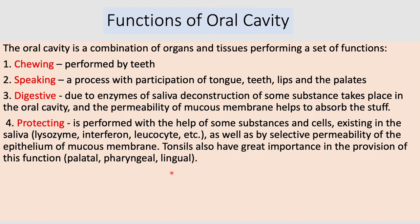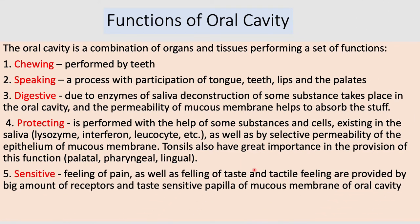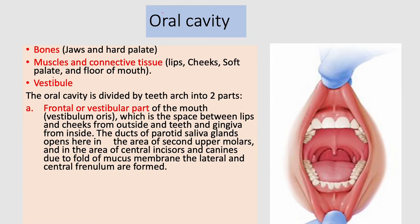Tonsils — palatal, pharyngeal, and lingual tonsils — also have great importance in providing the protective function. Then we have sensitivity: feeling of pain, feeling of taste, and tactile feeling, provided by receptors and taste-sensitive papillae of the mucous membrane. The bones forming the oral cavity are the jaws and the hard palate; muscles and connective tissue consist of the lips, cheeks, soft palate, and the floor of the mouth.